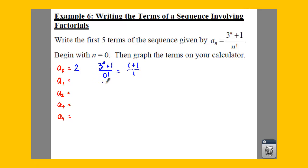You're going to do the same thing for your a sub 1. So we have 3 to the 1 plus 1 all over 1 factorial. So you get 3 plus 1 all over 1, which is just 4.